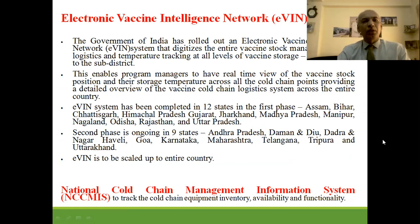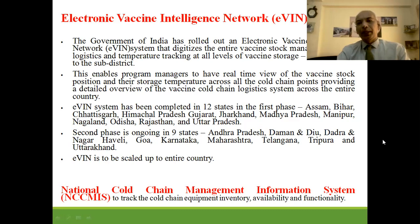The Electronic Vaccine Intelligence Network (eVIN) was rolled out by the Government of India to digitize entire vaccine stock management, logistics, and temperature tracking at all levels from manufacturing to sub-district level. It enables program managers to have real-time review of vaccine stock and storage temperature. eVIN has been completed in 12 states in the first phase and is now in 9 states in the second phase, being scaled to the entire country. The National Cold Chain Management Information System (NCCMIS) tracks cold chain equipment inventory, availability, and functionality.